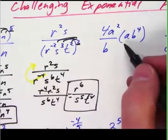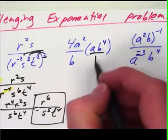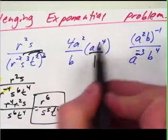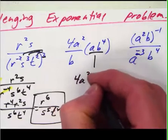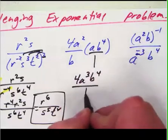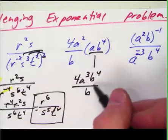Next question I've got a fraction times this term, well this term really can just be over one then I can multiply the tops and multiply the bottoms. So now I've got 4a to the third b to the fourth over b and that would be my final answer there until I do my reducing.